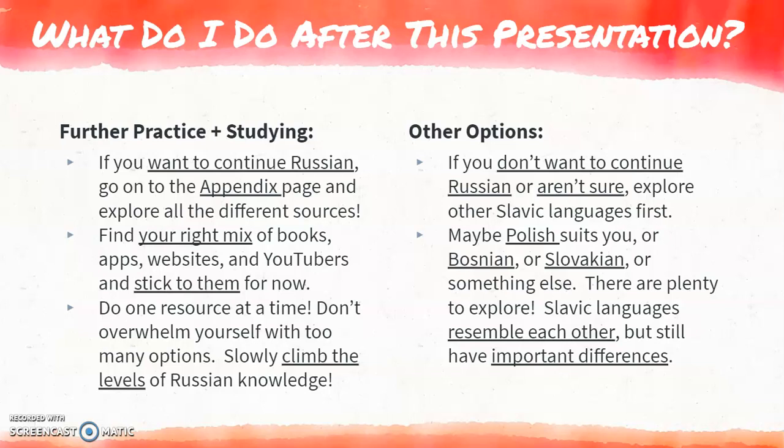Slowly climb the levels of Russian language. But if you don't want to learn Russian anymore or aren't sure if you like it, make sure to check out other Slavic languages too — there are so many of them. They're all very similar to Russian and each other, and sometimes they can even understand each other almost perfectly, but there are still important differences like the writing systems and the pronunciations. Some examples include Polish, Bosnian, Slovakian, Ukrainian, Serbian, Bulgarian, Czech, Slovenian, Macedonian, and so many more options.